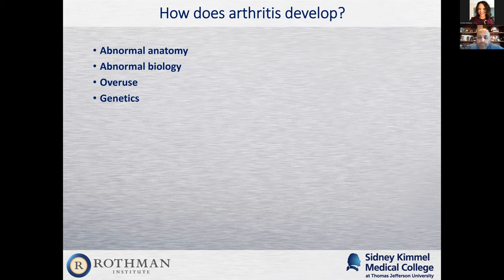How does arthritis develop? You can develop it from abnormal anatomy — maybe you had a problem with your hip as a kid. Abnormal biology — maybe you have a problem with blood flow to your hip. Overuse, or even genetics: your mom and dad had hip replacements, your brother had a hip replacement, and now you need one as well. All different ways that we can develop arthritis.